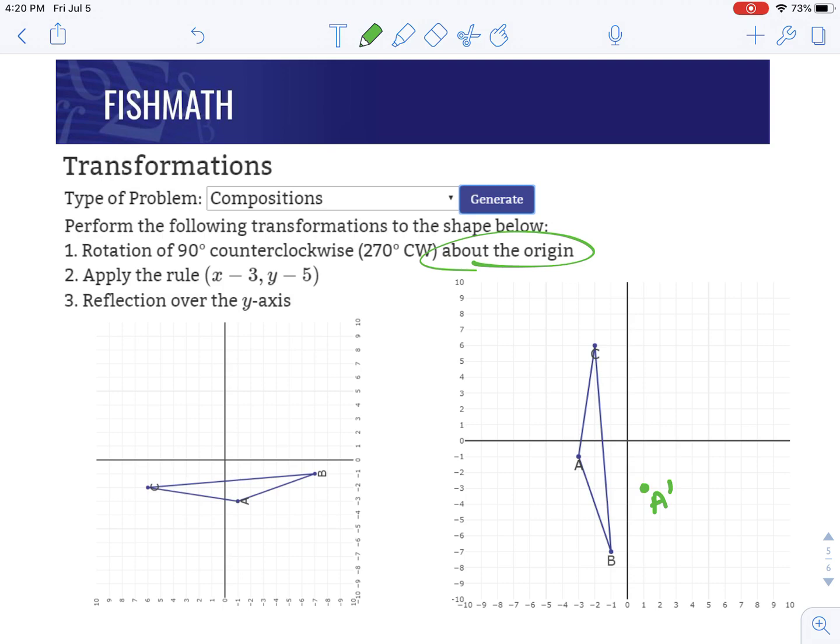B from the origin, if you turn it again, 90 degrees counterclockwise. B is at seven to the right, and one down from the origin, it's always from the center point. So seven to the right, one down would be right over here, that's B prime.